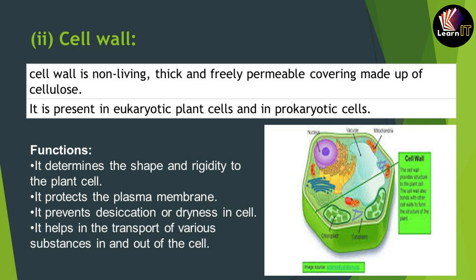The functions of the cell wall are: first, it determines the shape and rigidity of the cell — whether the cell is square, circular, elongated, or oval. Second, it protects the plasma membrane, which is the next layer inside the cell wall in plant cells. Third, it prevents desiccation or dryness, preventing water particles from leaving the cell. Fourth, it helps in the transport of various substances in and out of the cell.